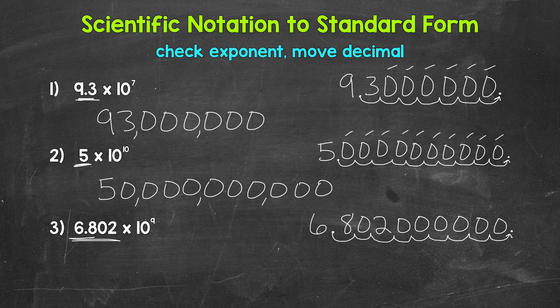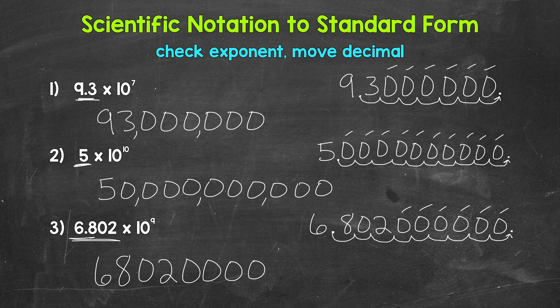And that is our standard form. Let's rewrite this — we have 6, 8, 0, 2, and then 6 zeros: 1, 2, 3, 4, 5, 6. Then we can put in the commas — a comma right here, right here, and right here. So 6,802,000,000. So there you have it — that's how to go from scientific notation to standard form. I hope that helped.